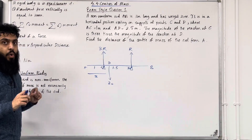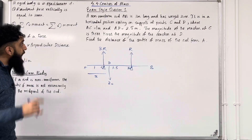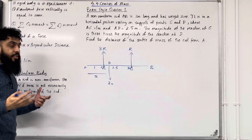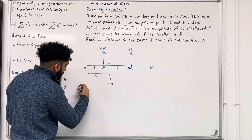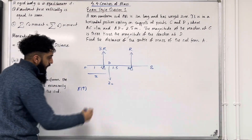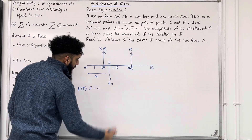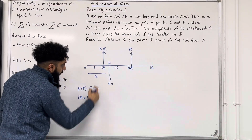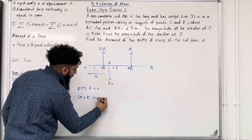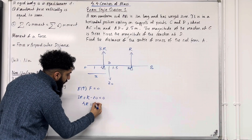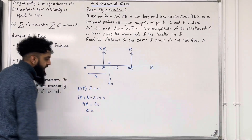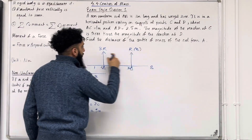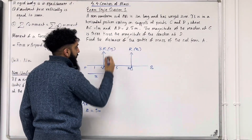Now I'm going to start by working out R. To work out R we have to use condition number 1 of equilibrium — resultant force vertically is equal to zero. So we're going to resolve vertically, taking upwards to be the positive direction. We have 3R plus R minus 20 equals 0, so 4R equals 20, hence R equals 20 divided by 4, which is 5 Newtons. So we've got 5 Newtons at D and 3 times 5, which is 15 Newtons at C.